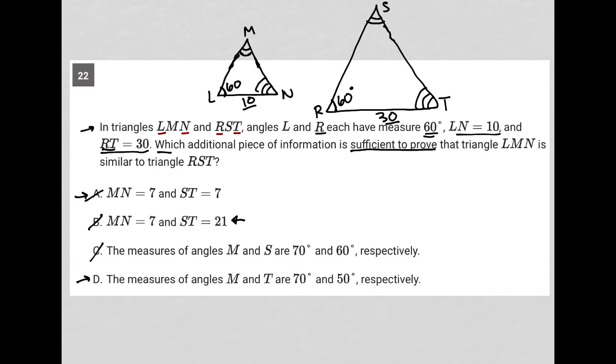Choice D says the measures of angles M and T are 70 and 50. Okay, so if M is 70 and T is 50, well, 60 plus 50 is 110. That would make S 70 in order to have all three angles adding up to 180.